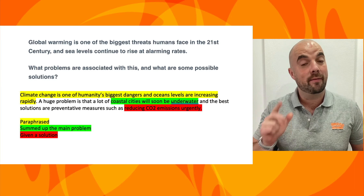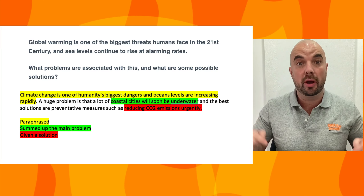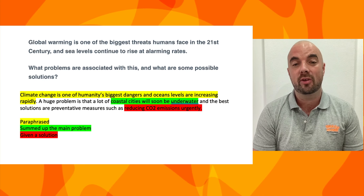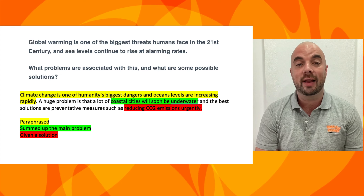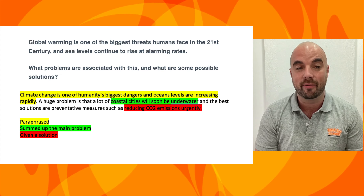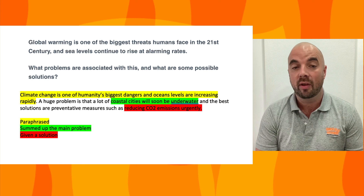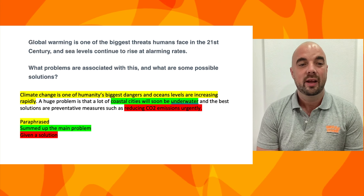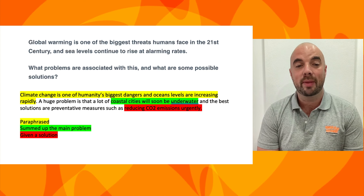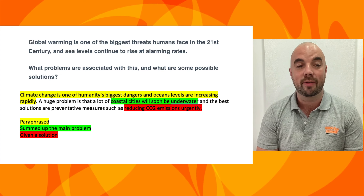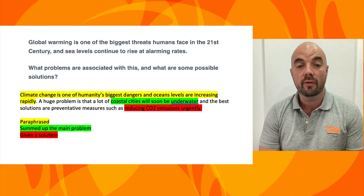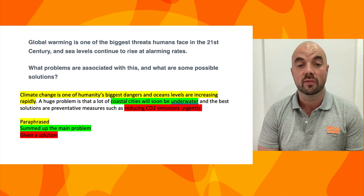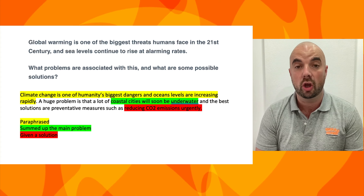The last example before I give you one to try is: 'Global warming is one of the biggest threats humans face in the 21st century and sea levels continue to rise at alarming rates. What problems are associated with this and what are some possible solutions?' Color-coded again: 'Climate change is one of humanity's biggest dangers and ocean levels are increasing rapidly. A huge problem is that a lot of coastal cities will soon be underwater and the best solutions are preventative measures such as reducing CO2 emissions urgently.'